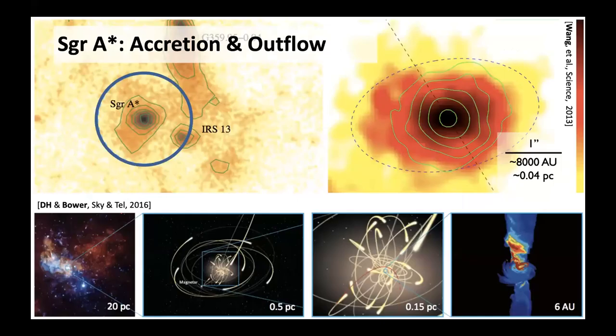This is a look from the Chandra X-ray visionary program — very deep observations, a megasecond of observations with Chandra, to look at the X-ray emission very close to Sag A*. The blue circle is the Bondi capture radius for our black hole. The green contours show the flare emission from Sag A* in contrast to the quiescent emission shown in the color scale background. This work is from Daniel Wang and the XVP collaboration, and you can really see how symmetric the flare emission is and how elongated the quiescent emission is.